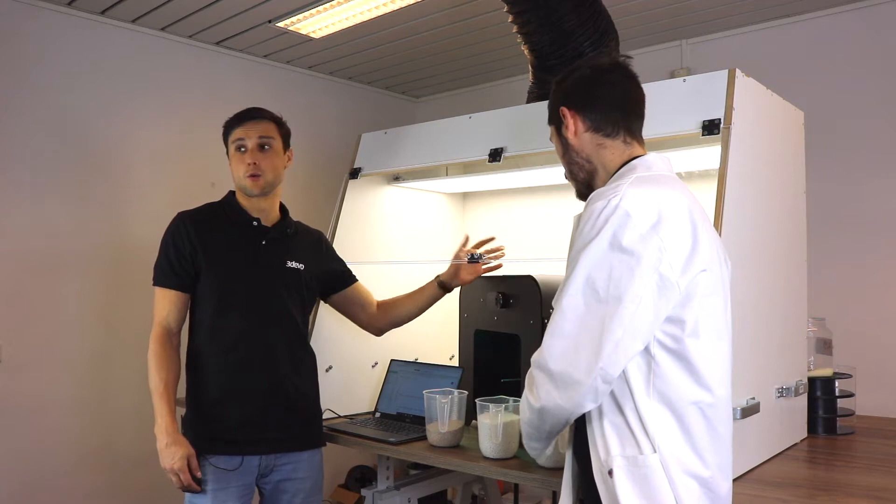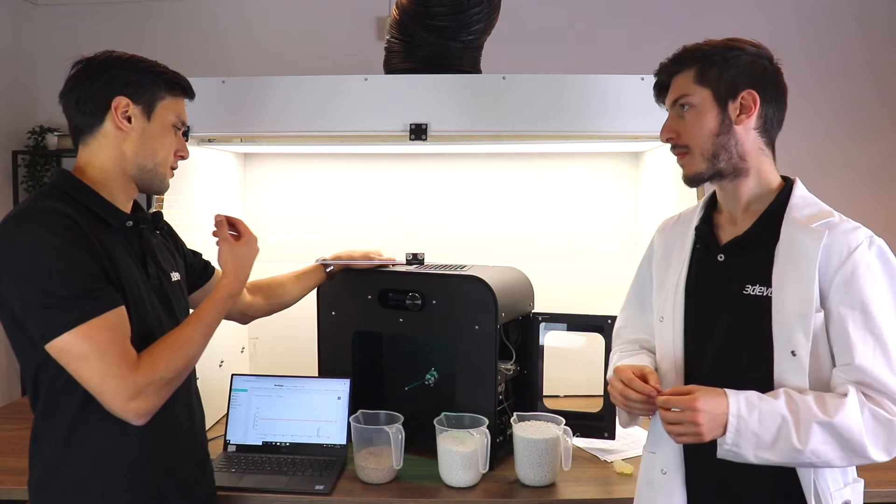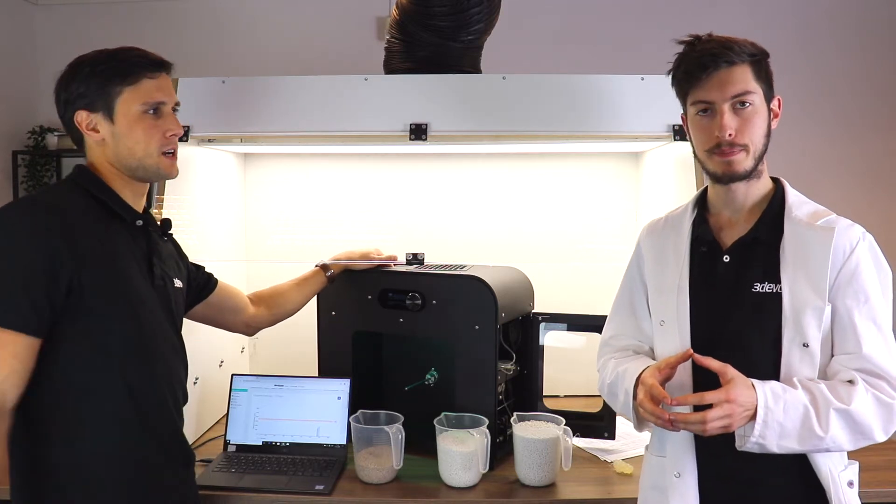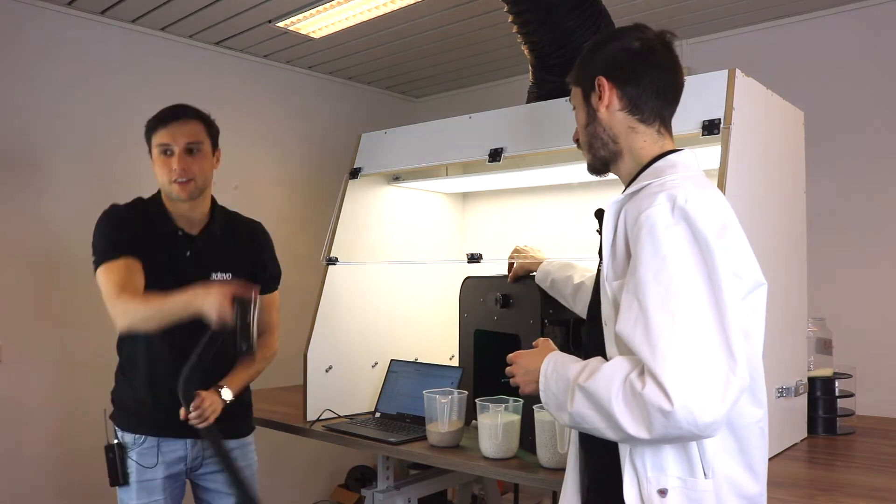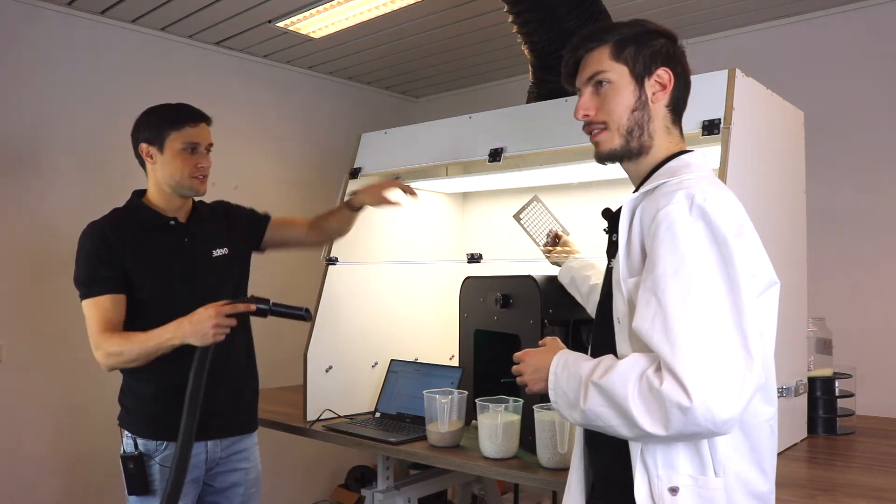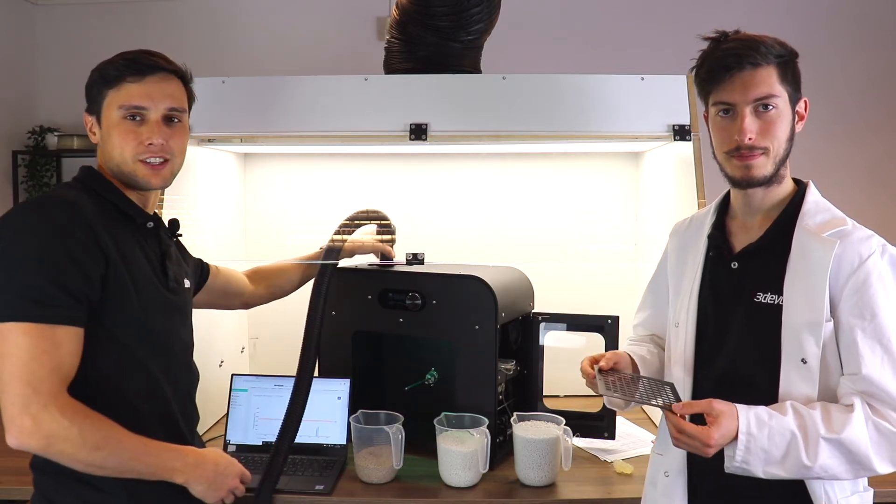You can just either wait until the hopper is completely empty and you can see the screw. This can take quite some time, so I want to speed up the process. I'm grabbing a vacuum cleaner, remove the grid first and then you can clean out the entire hopper.